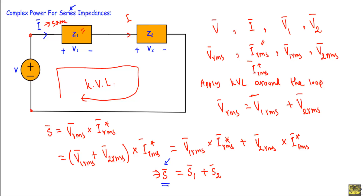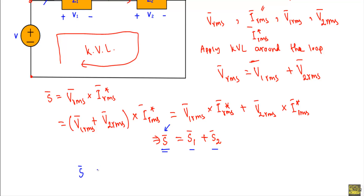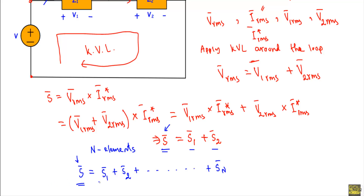From both series and parallel impedance cases, we can see that the complex power supplied by the source is equal to the sum of complex power delivered to the loads. We can conclude that whether loads are connected in series or in parallel, in general the total power supplied by the source equals the power delivered to the loads. For N elements in an AC circuit, S = S1 + S2 + ... + SN. This means that complex power in a network is the sum of complex powers of the individual components.